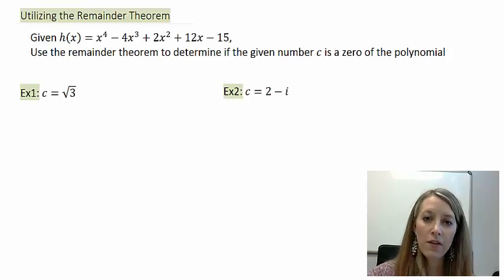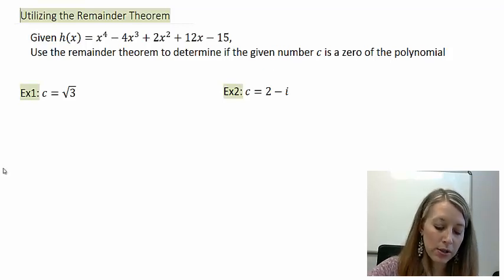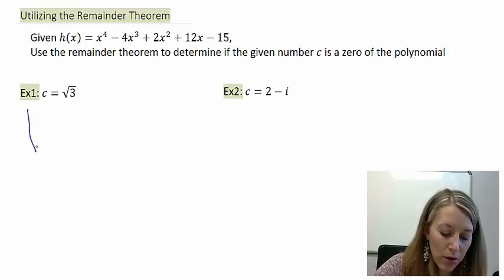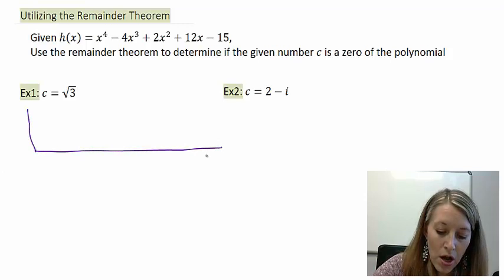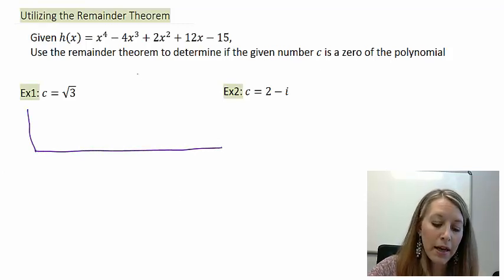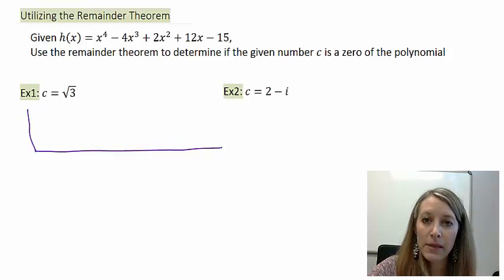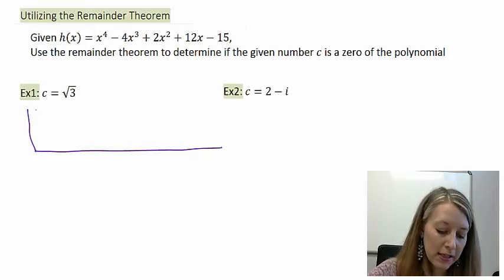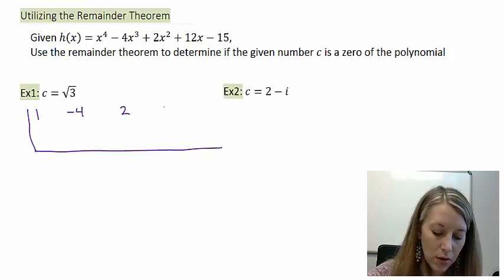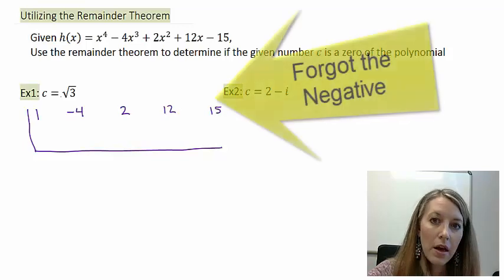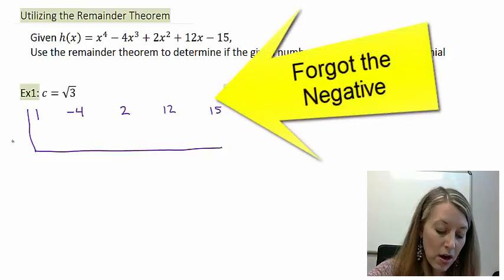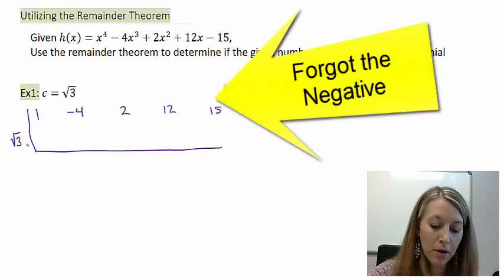So to figure out if they are a zero or not, we're going to set up our synthetic division and see whether our remainder comes out to be zero. I need to use my coefficients, but first I need to ask myself if I'm missing any terms, and I am not. So I just use my coefficients that I see: 1, -4, 2, 12, and -15. Since it gives me the divisor here, I'm going to use exactly that number.